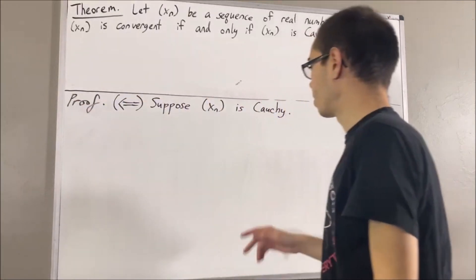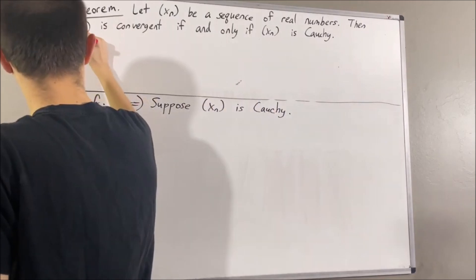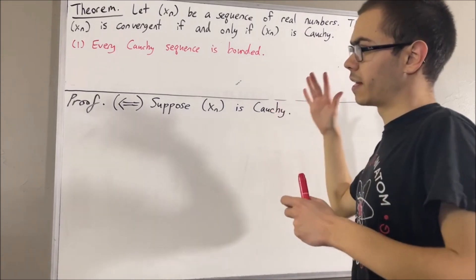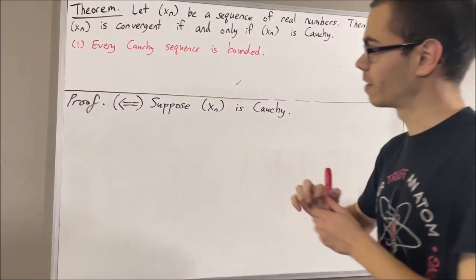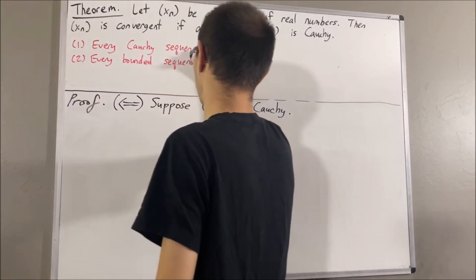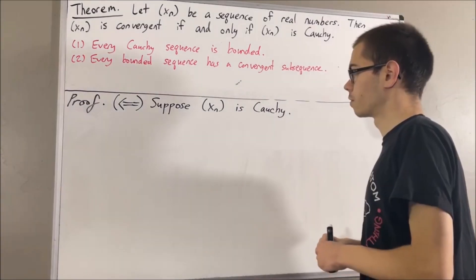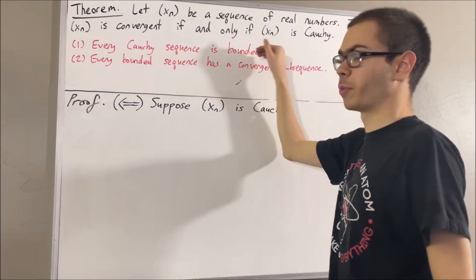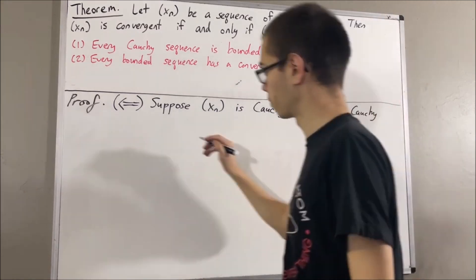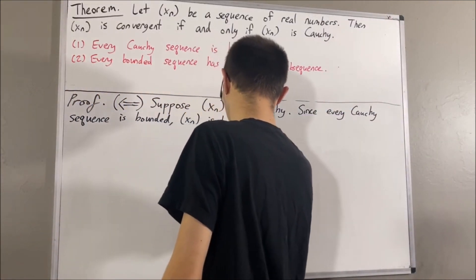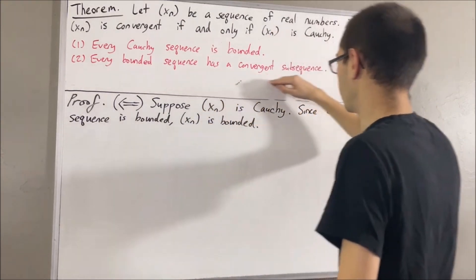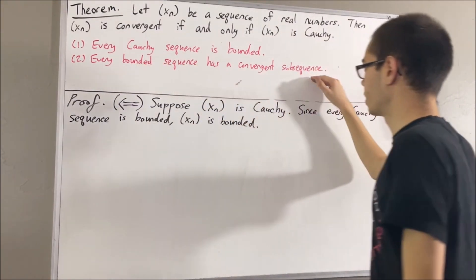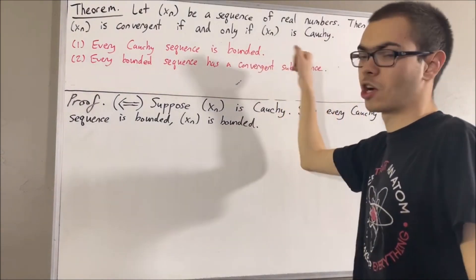The first preliminary result is that every Cauchy sequence is bounded. The second preliminary result is that every bounded sequence has a convergent subsequence. So first of all, since xn is a Cauchy sequence, we know that xn is bounded by our first preliminary result. But then, since xn is bounded, we can apply our second preliminary result — often referred to as the Bolzano-Weierstrass theorem — to say that xn has a convergent subsequence.